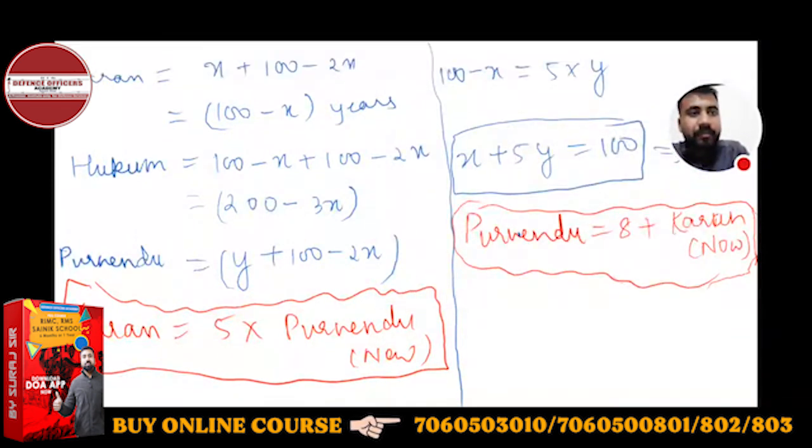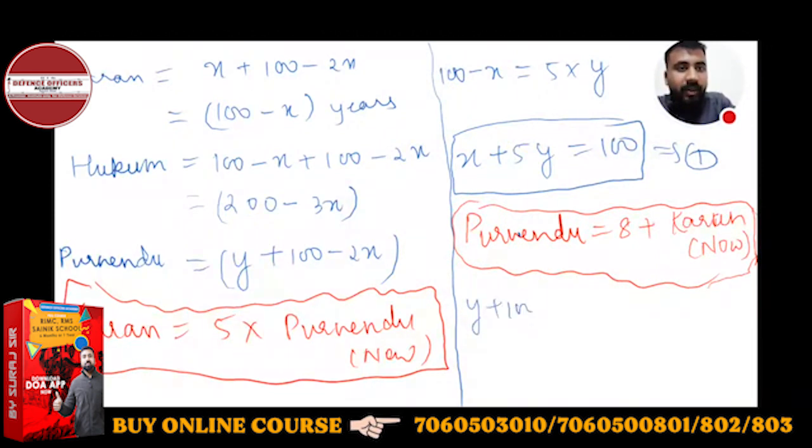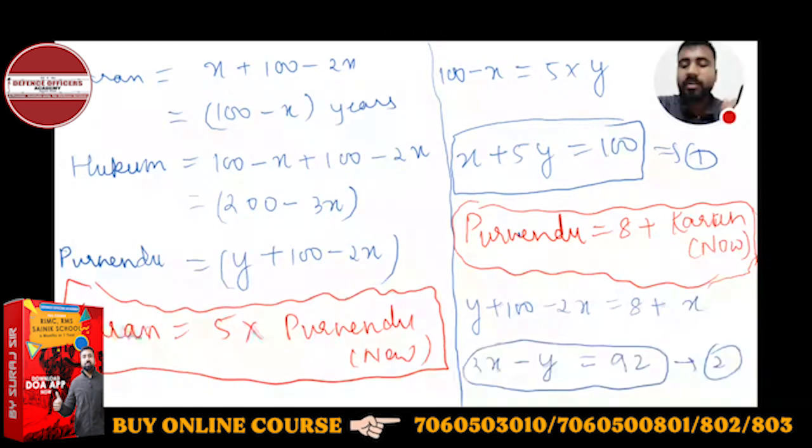Let's solve it. So Purnindu is Y plus 100 minus 2X is equal to 8 plus X. So 3X minus Y is equal to 92.